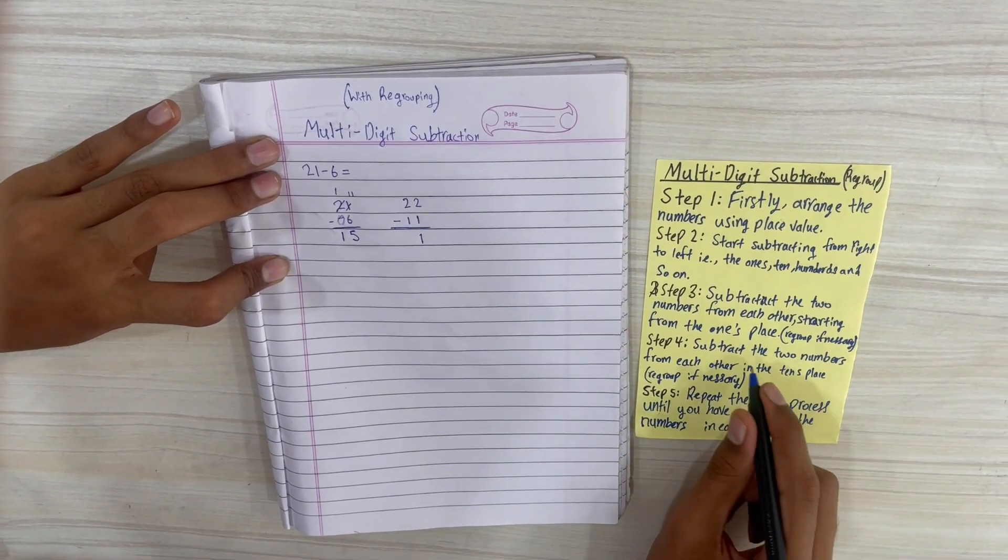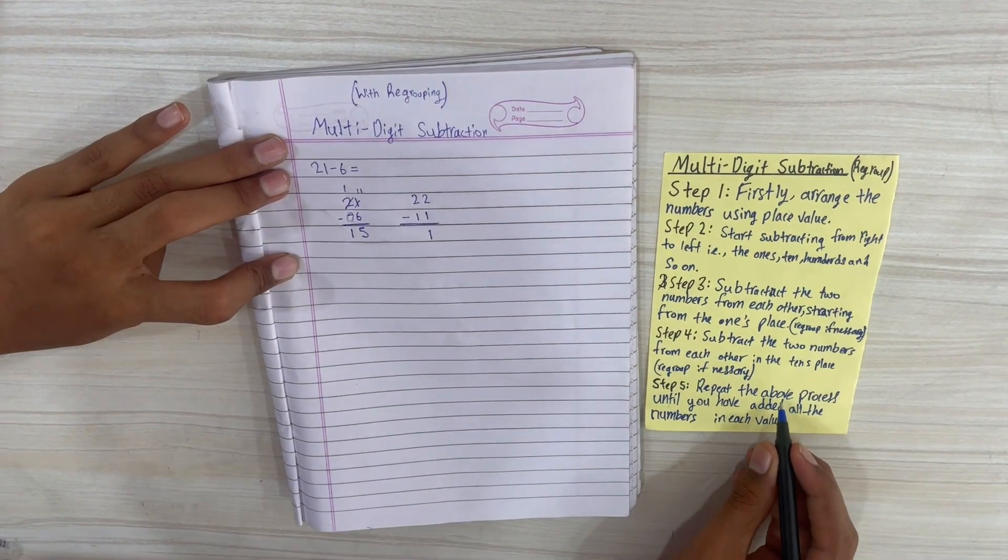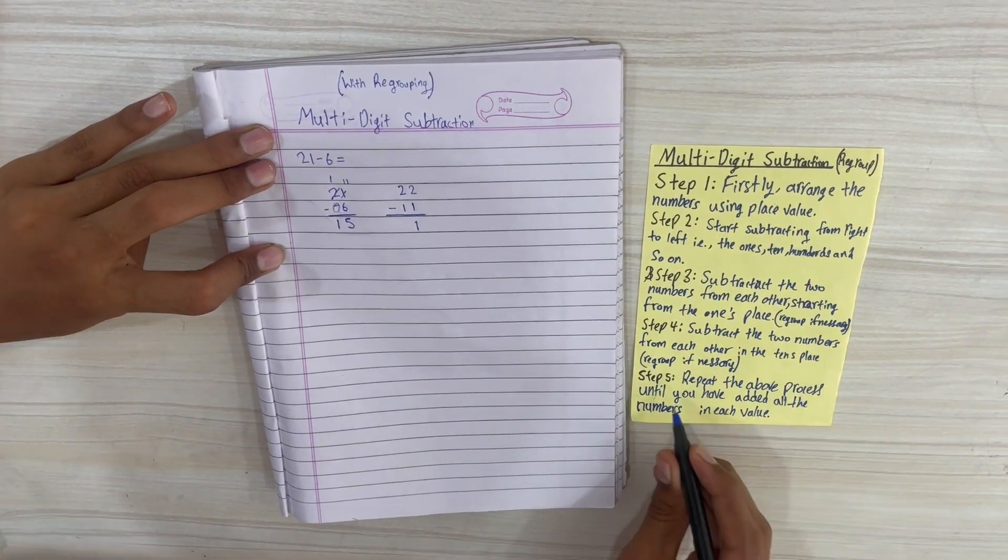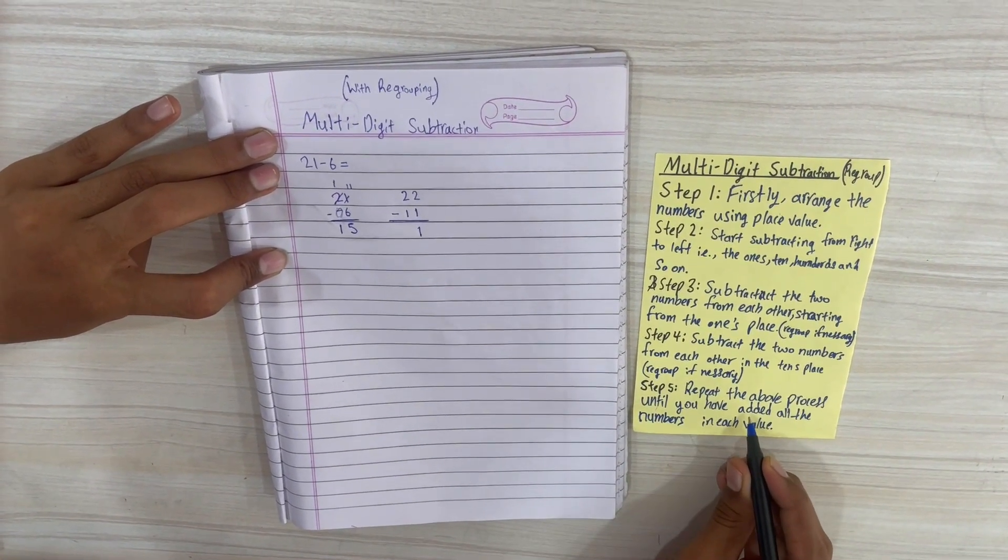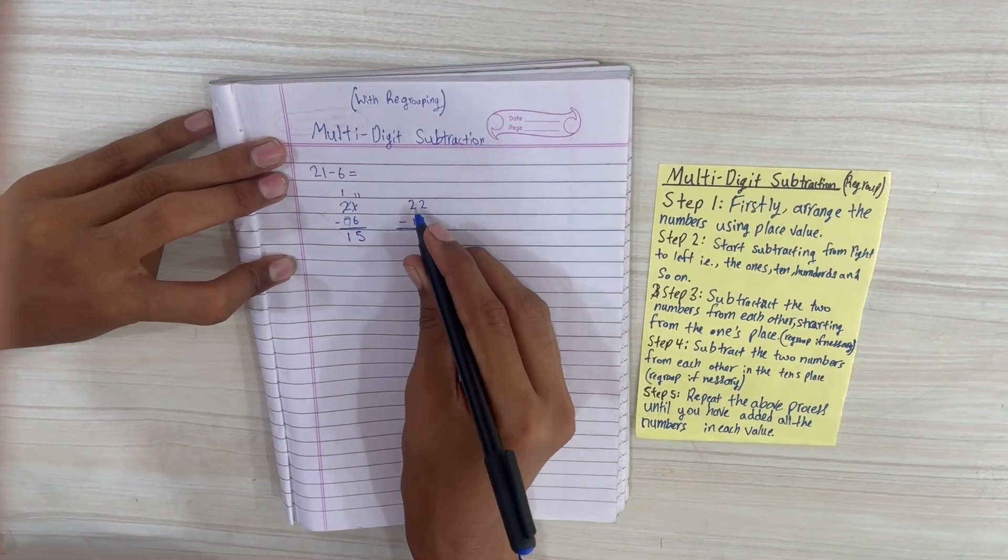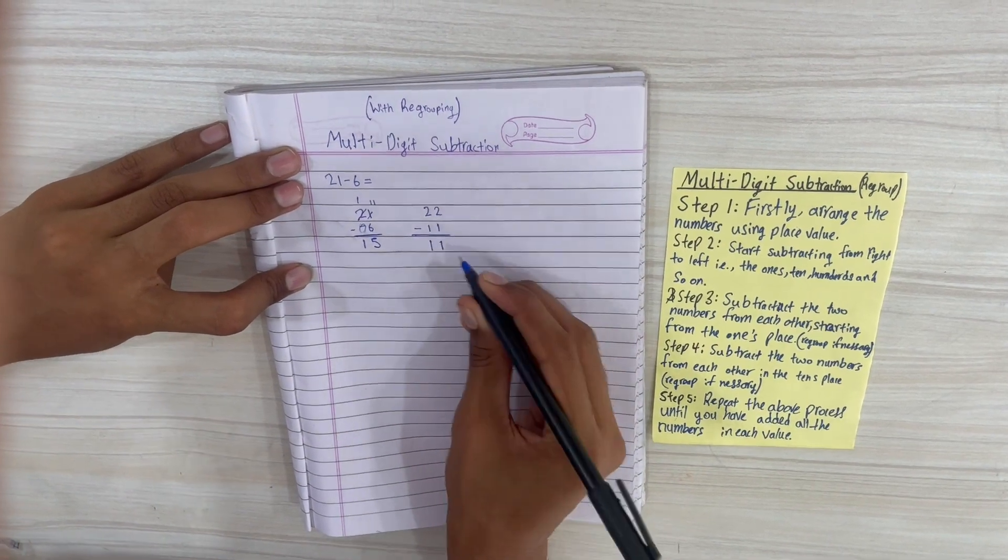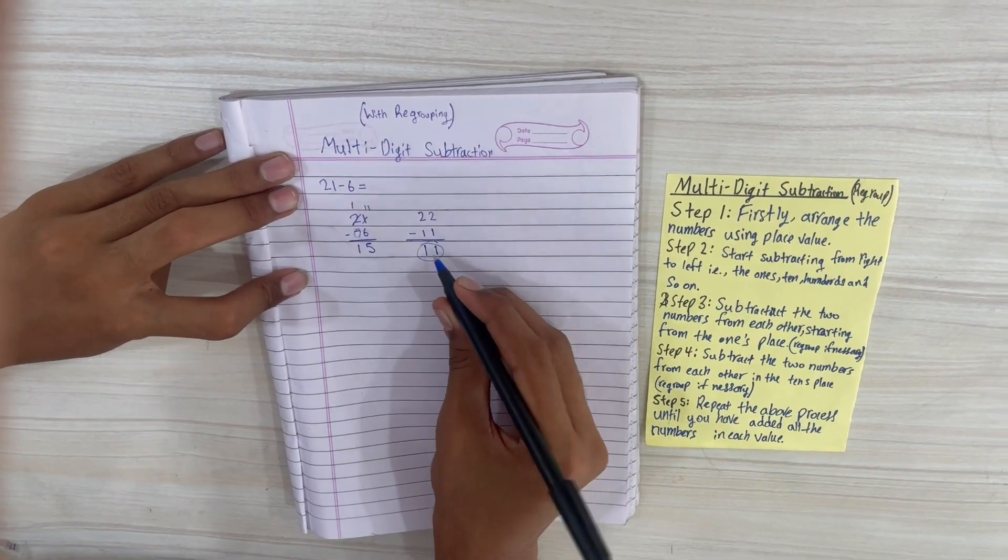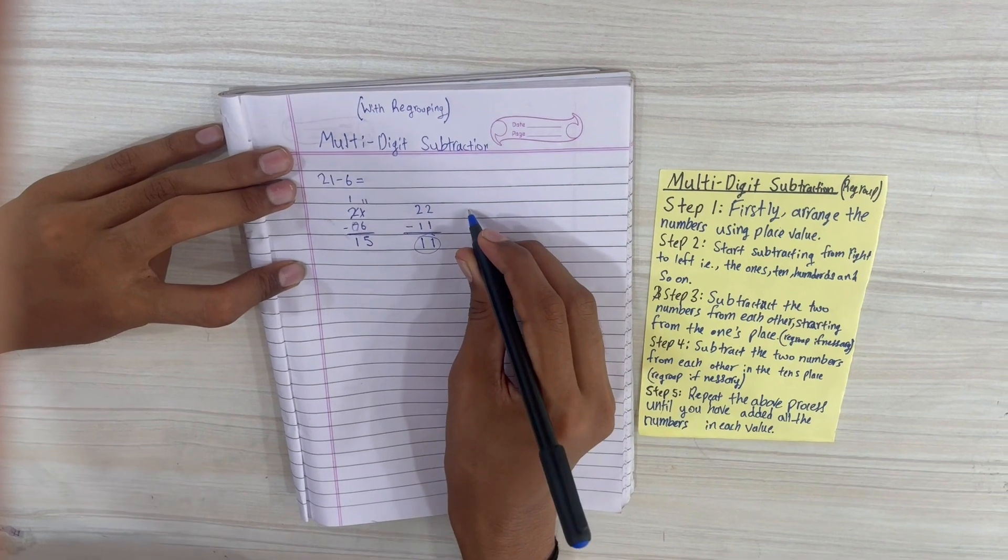Now we'll continue subtracting. Repeat the above process until we have subtracted all the numbers in each place value. So 1, now 2 minus 1 is equal to 1 again. So now we got the answer of 11. Now we're going to try a harder question.